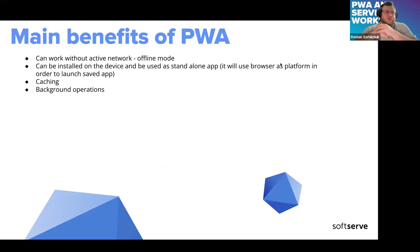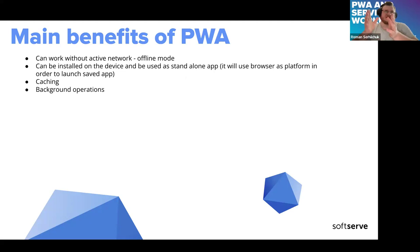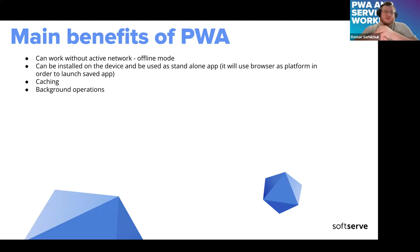The main benefits of PWA: it can work without an active network, so basically offline mode, which is pretty useful. PWA can also be installed on the device and be used as a standalone application. This is a double-edged sword — on one hand it's a benefit because you can install your web application as a standalone app on your home screen, but it's also a downside because in order to launch PWA from the home screen, it will first launch the web browser and then your web application inside the browser. So PWA is dependent on the browser, making it a performance bottleneck.